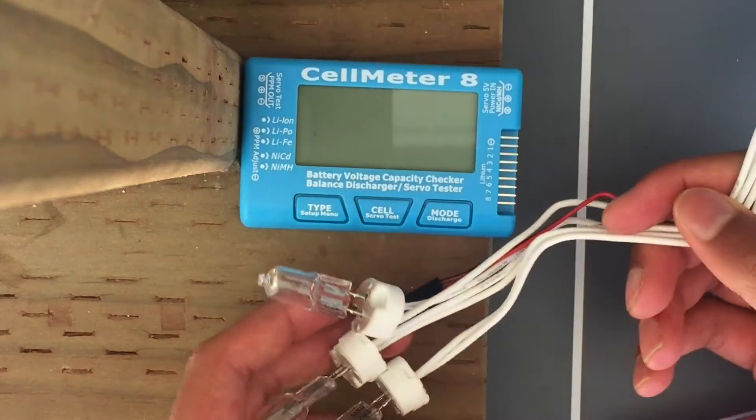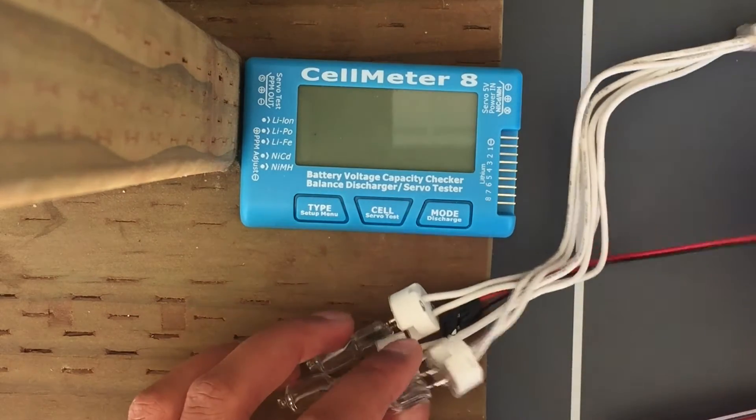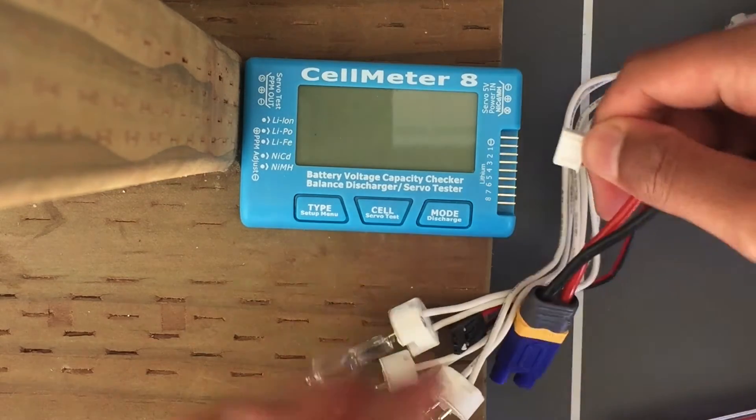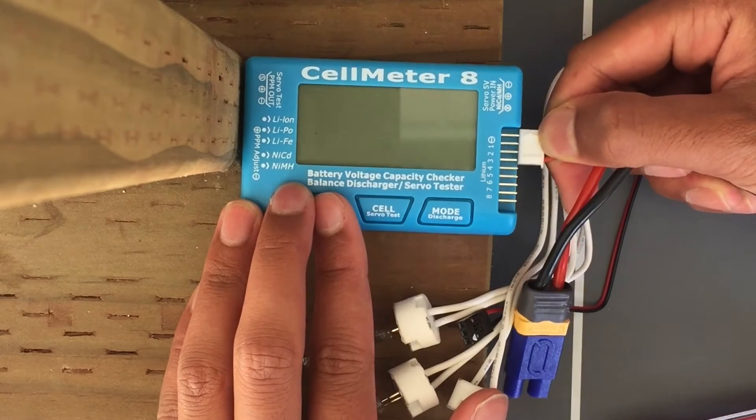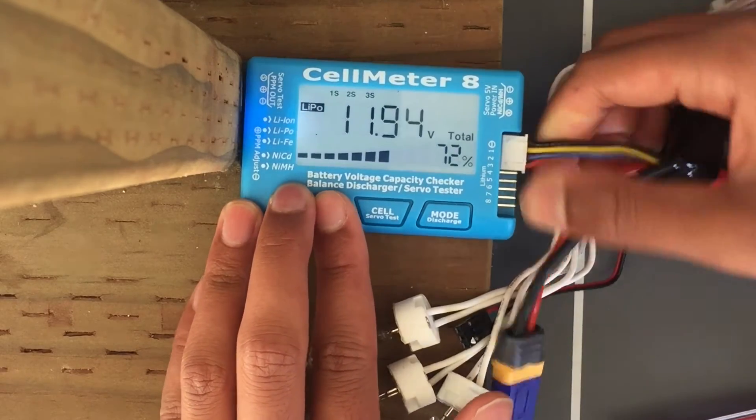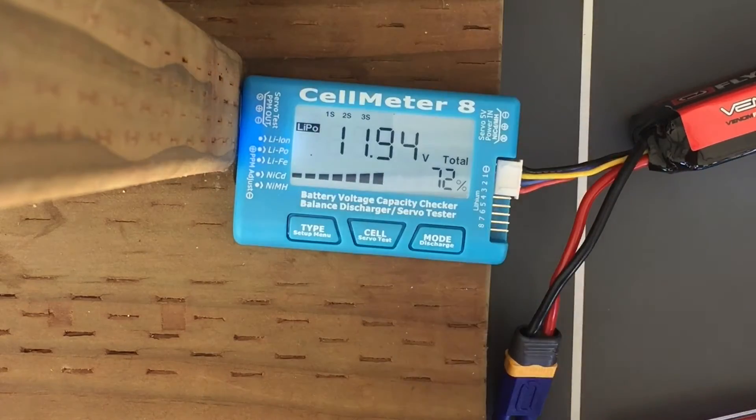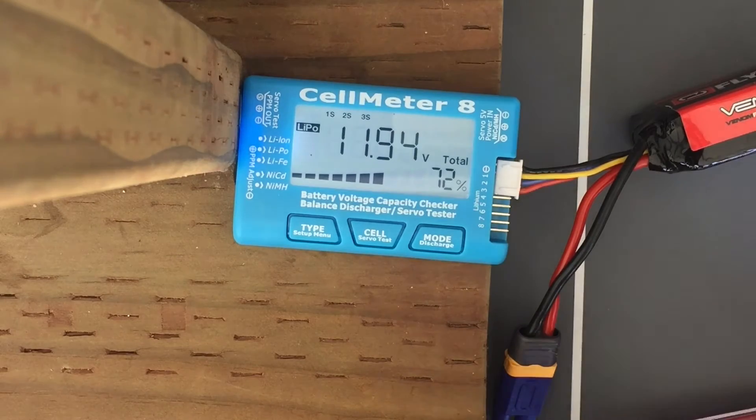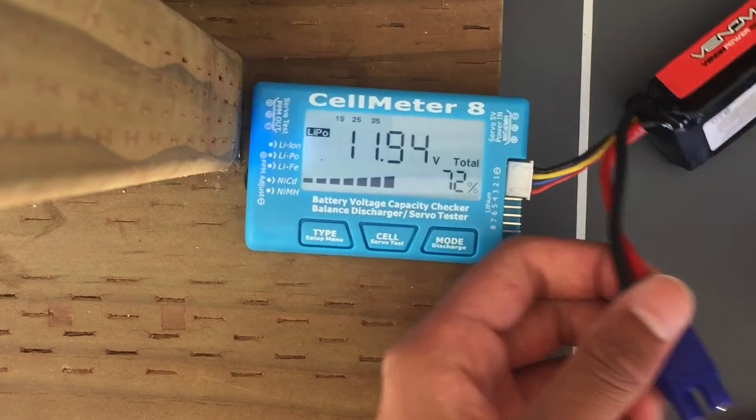Now for discharging, the first step is you plug in the balance connector into the side of the CellMeter like earlier. Plug it in like so.